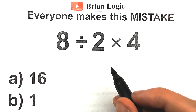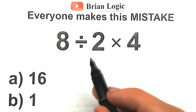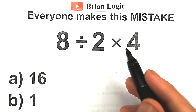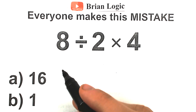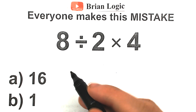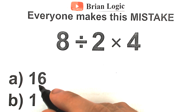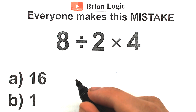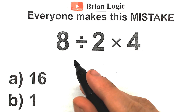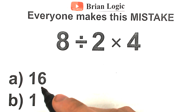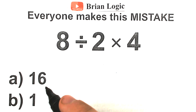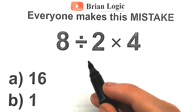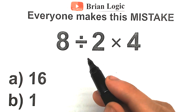Welcome to BrainLogic. I hope you've seen this challenge on the internet — this is a viral challenge: A divided by 2 and times 4. People all over the world are arguing about the correct answer. One part of people say the correct answer is 16, another part say 1, and in this video I'm going to fully explain what the correct answer is, show you these two interpretations, and explain when the answer will be 16 and when it will be 1. Let's go and figure out this math problem.